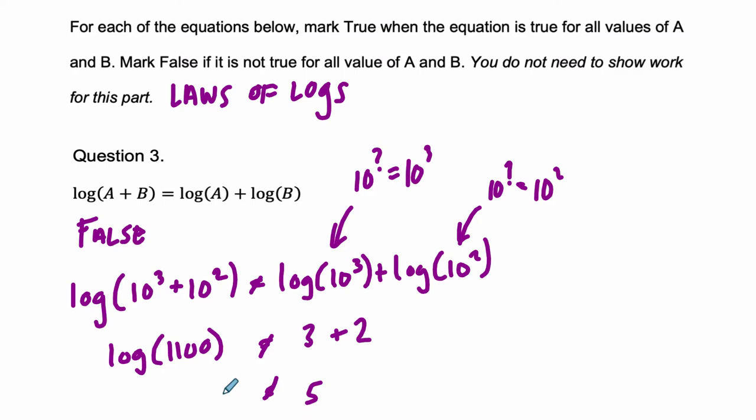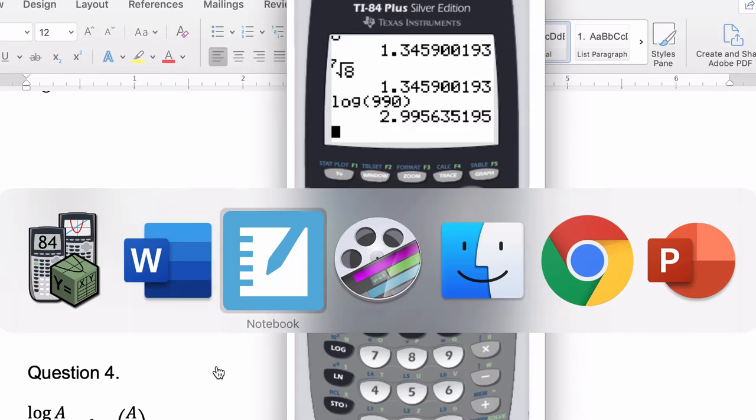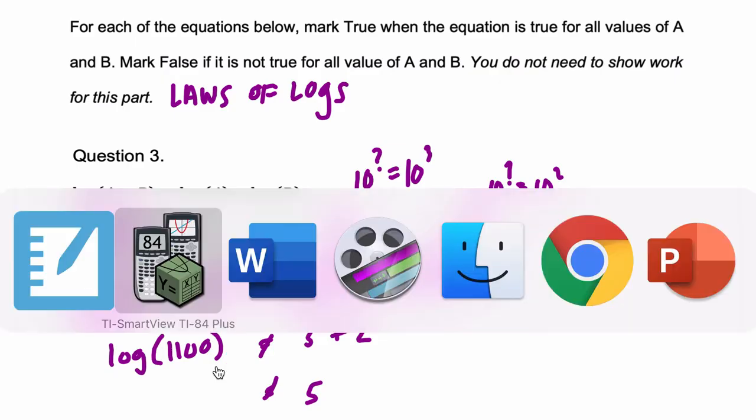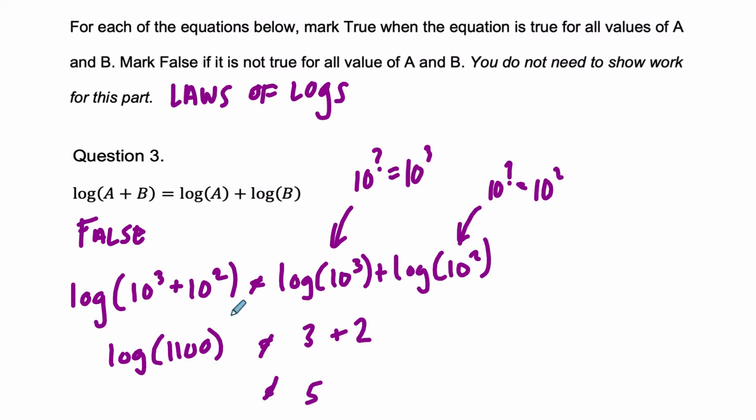Let's just pull up the calculator to make sure we agree with that. So let me go here. On the calculator we've got the log, common log of 1100. So it's only about 3, not really close to 5.